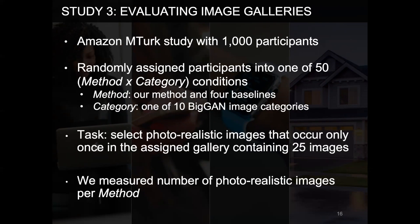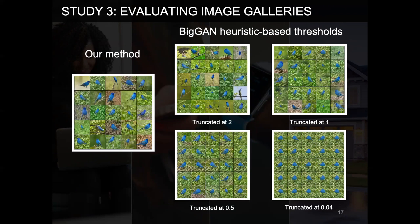In study 3, we recruited another 1,000 participants and asked them to select photorealistic images that occur only once in an image gallery using the same tool as in study 2. This time, we asked them to select images from galleries generated using our method and the baseline at 4 thresholds. We primarily measured the number of photorealistic images per method, but we also considered the effects of category.